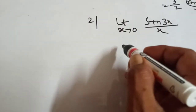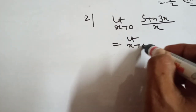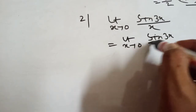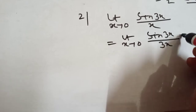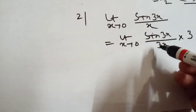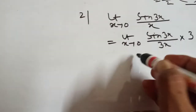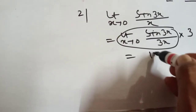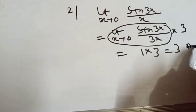Now adjust it. Limit x tends to 0: write sin 3x by 3x, then multiply by 3. The 3 in the denominator cancels with the 3 multiplied outside. This part, sin 3x by 3x, equals 1 by the formula. So 1 into 3 equals 3. That means the answer is 3.